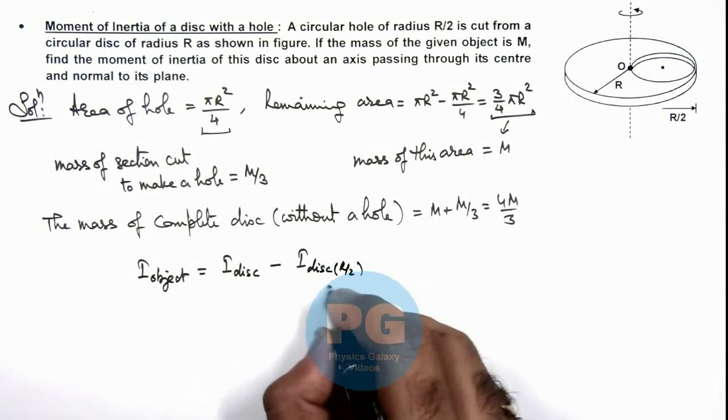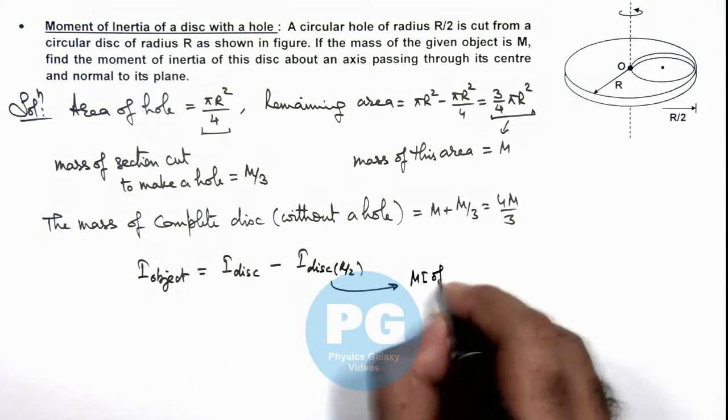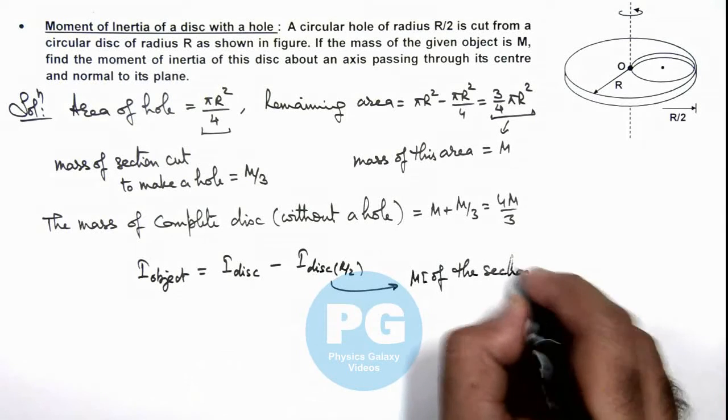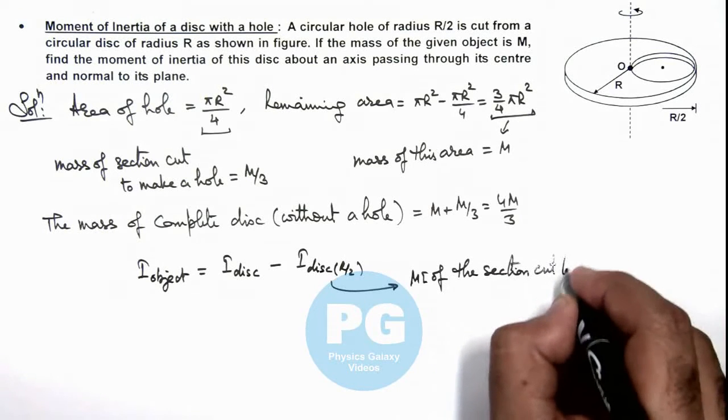And we can write this is the MI of the section cut to make a hole.